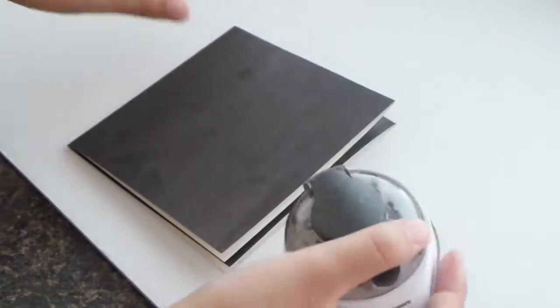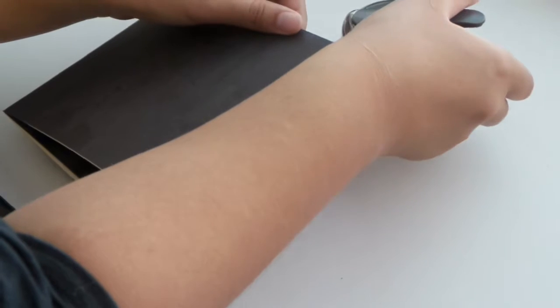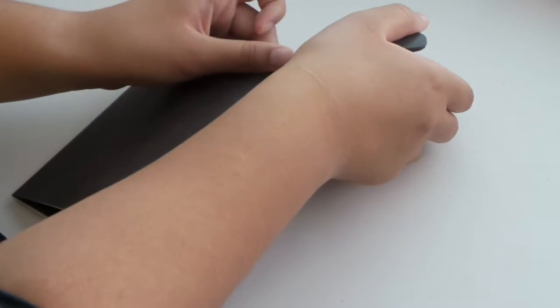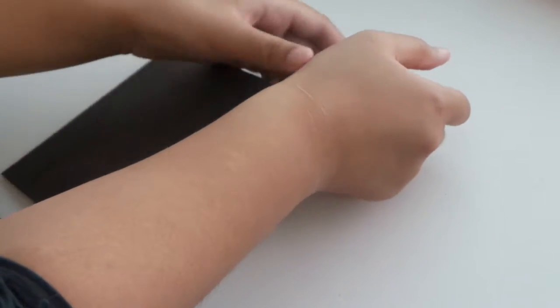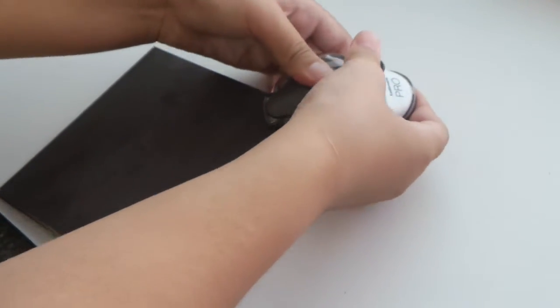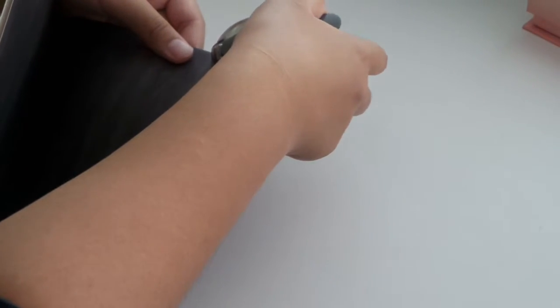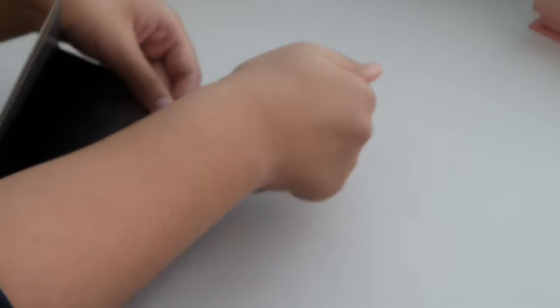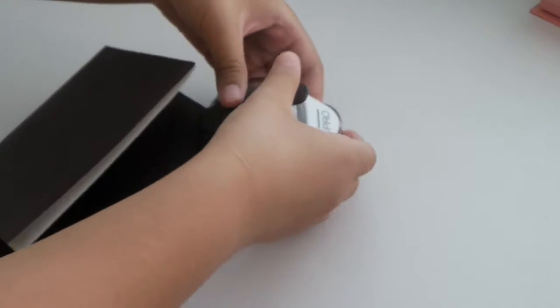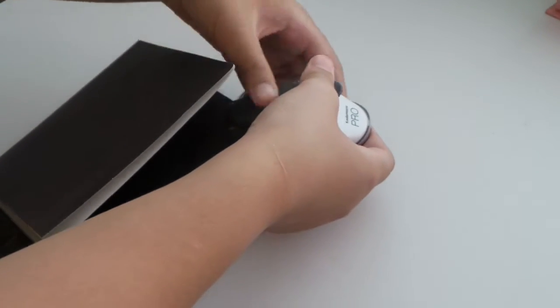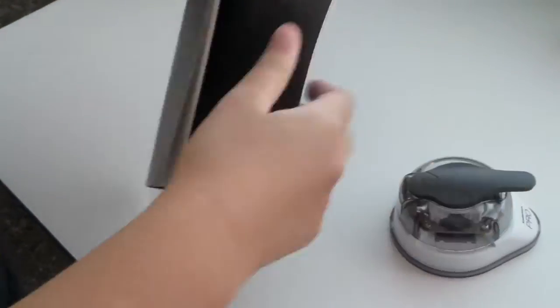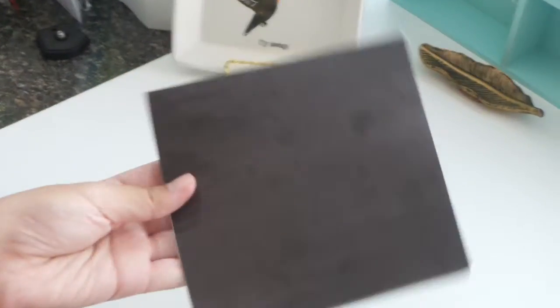Now I'm going to use this corner rounder to give it a more polished look. Alternatively, you can use scissors to round the edges. Hey, look how cute that is! Look at that, flawless, 10 out of 10.